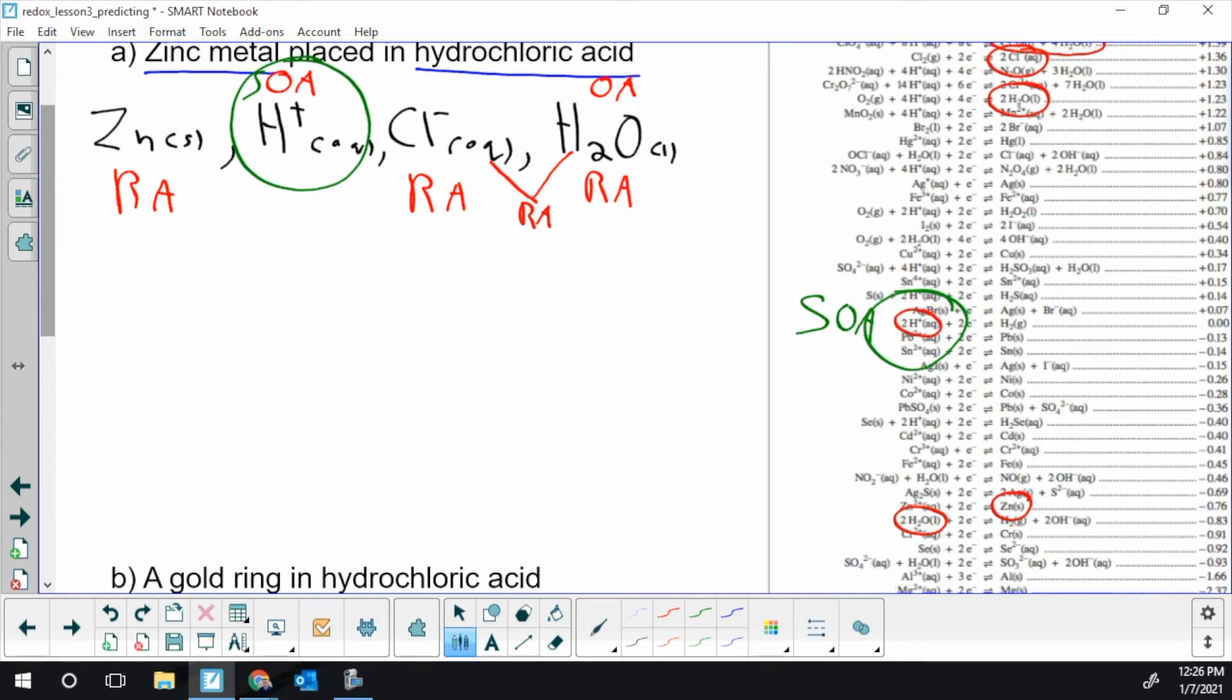So that oxidizing agent is going to be my reduction. So my strongest OA, which is my GER or my reduction, I keep using the GER instead of just going R to remind you it's the gaining. That's 2H+. And now I'm just copying the half reaction, exactly what's in the table. You're not predicting it. You're just pulling it.